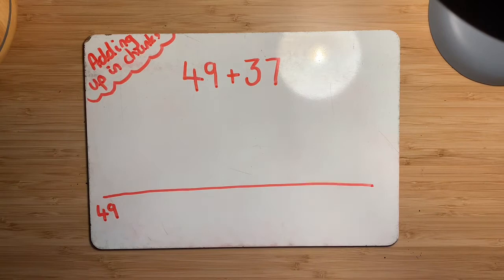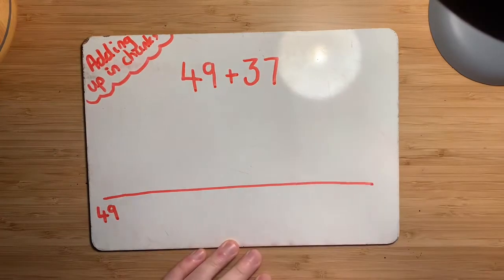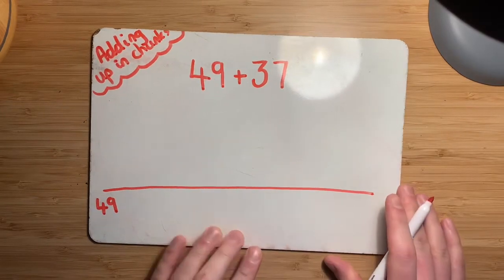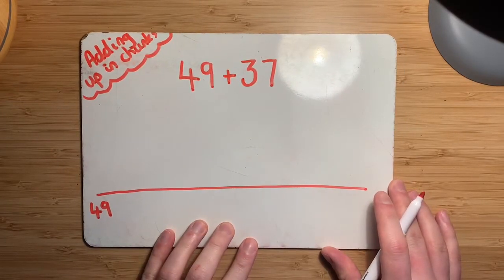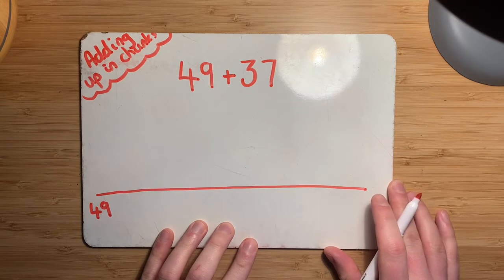And I know that this sum is maybe quite an easy sum, but it's just to give you an idea of how to do it. And obviously you can use bigger numbers as well, just using the exact same strategy. So what we want to do next then is think about how could we chunk up the number 37. And obviously there's loads of ways we could do it and there's no right or wrong way of chunking it up.